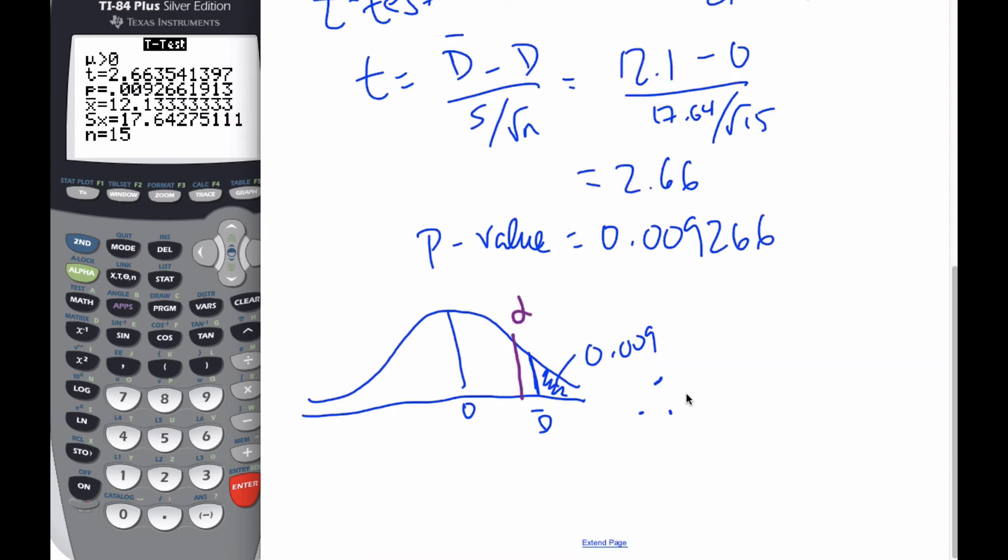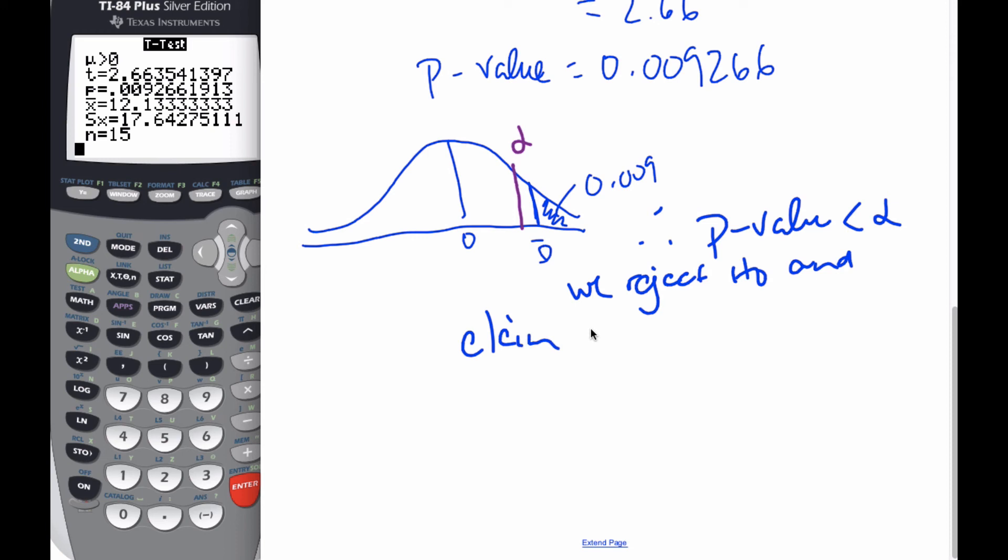So, therefore, since the P-value is small compared to alpha, it is inside the critical region. Therefore, we reject H0 and claim strong evidence that the pollinating insects have declined.